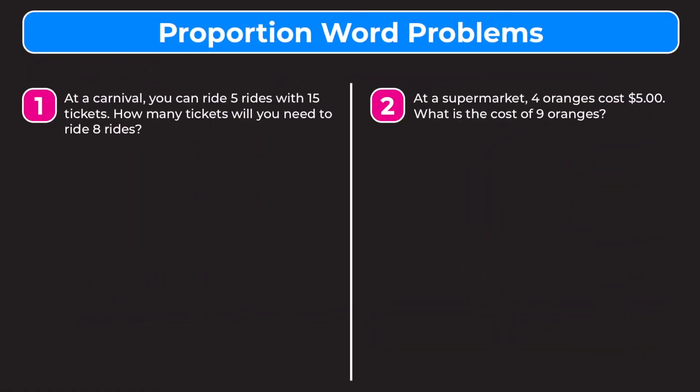In this video we're learning how to work through proportion word problems. Looking at example one: at a carnival you can ride five rides with 15 tickets — how many tickets will you need to ride eight rides? You could probably solve this without a proportion pretty easily, but I'm going to show you how to set up a proportion and solve it so you can apply this method for more challenging problems.